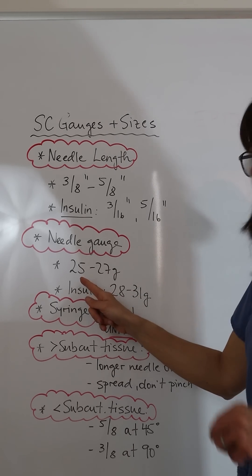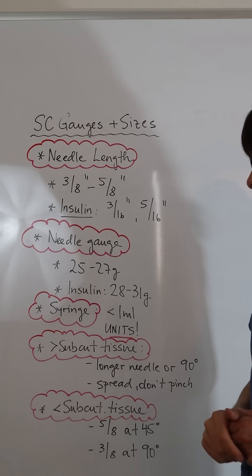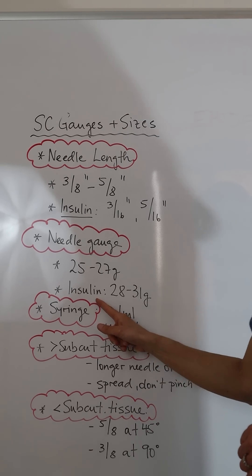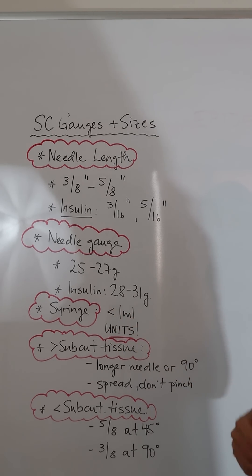The needle gauge is very small, usually 25 to 27 gauge, but for insulin syringes even smaller at 28 to 31 gauges.